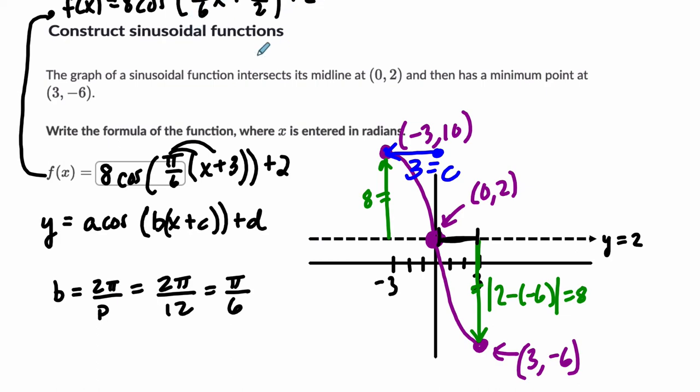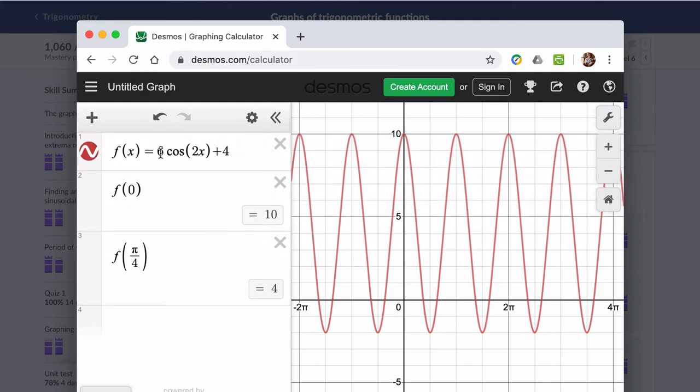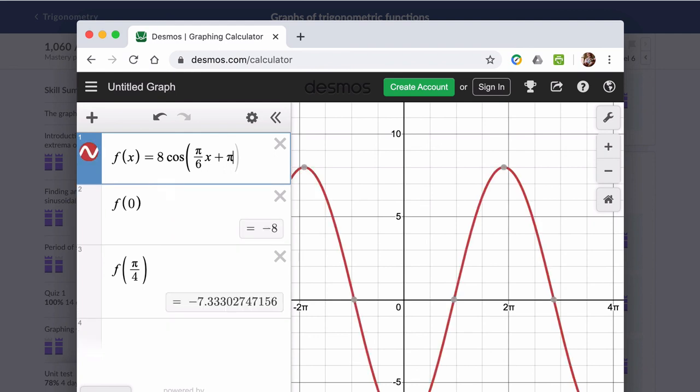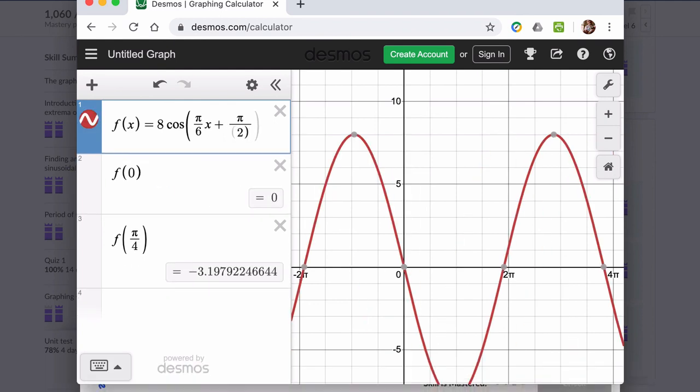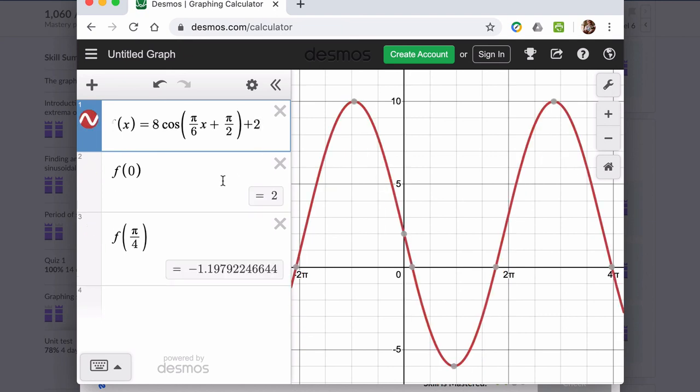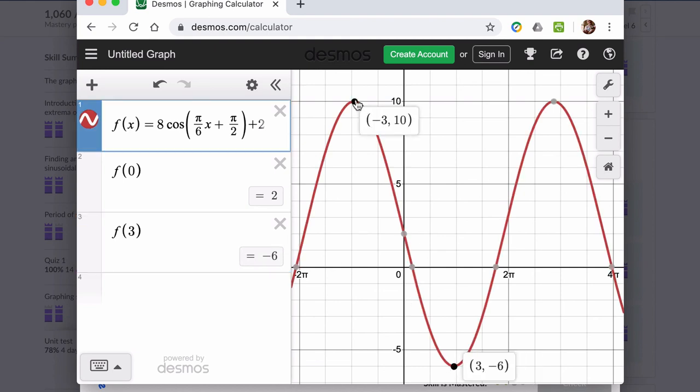So a little bit less parentheses here. When you check this in Desmos, I really encourage you to do that. Again, try the f of x notation. You can quickly type this in: 8 cosine of pi over 6x plus pi over 2, and then plus 2. We are given some test points. f of 0 equals 2. That means the input of 0 gives us an output of 2 - it's this point right here. And we want to plug in 3, we should get negative 6. And we do. That's this point here. And you can see the other point, negative 3, 10. So we've got it.